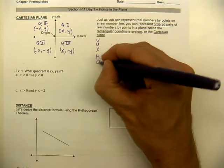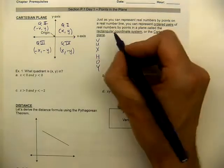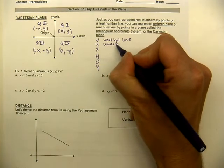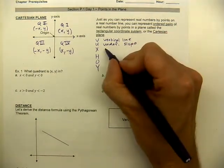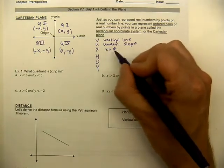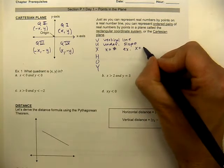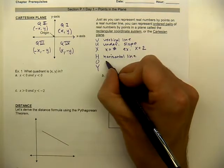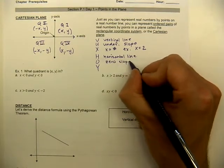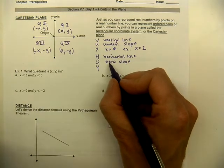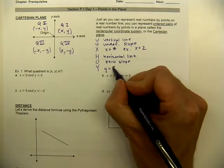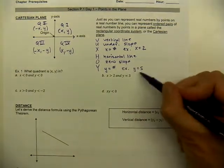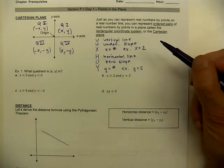You might remember the phrase 'Vox Hoy' as a way to memorize the difference. V stands for vertical line — a vertical line has undefined slope and its equation is X equals some number, for example X equals two. H stands for horizontal line — a horizontal line has zero slope (not no slope, zero as a measurement), and its equation is Y equals some number, for example Y equals five.